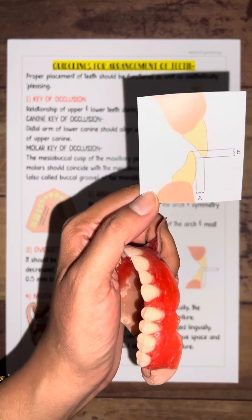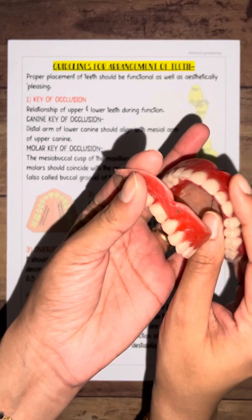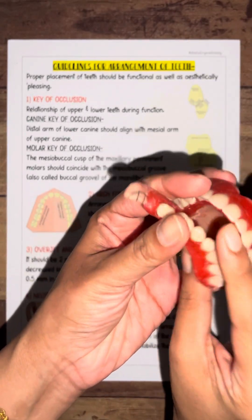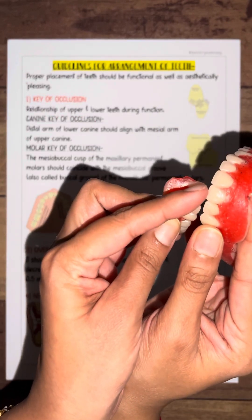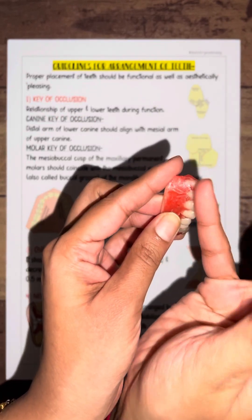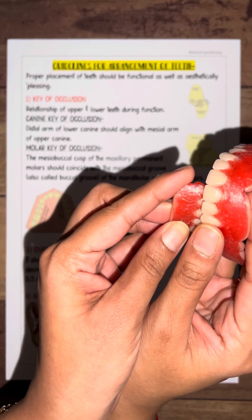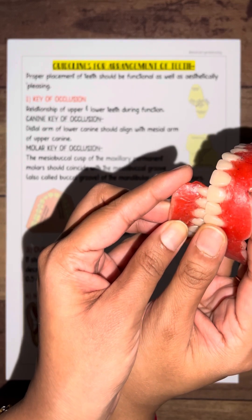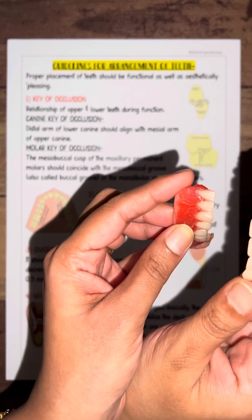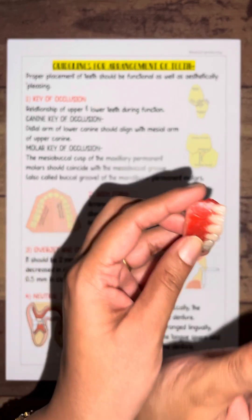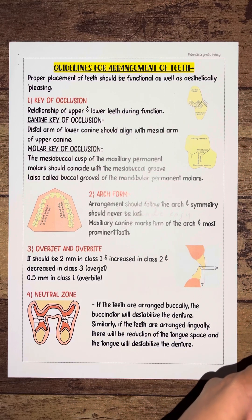Overbite is the vertical relationship — how much the lower incisor is covered by the upper incisor. If the upper incisor covers the lower incisor excessively, that is a deep bite. It should cover only around 0.5mm.